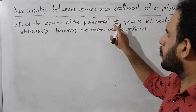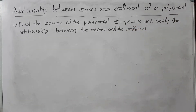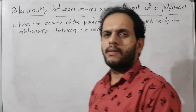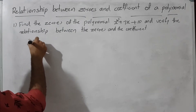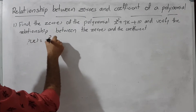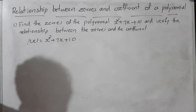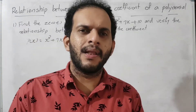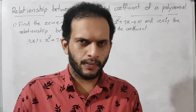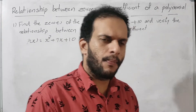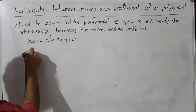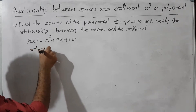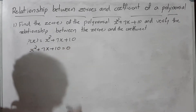Question: Find the zeros of the polynomial x² plus 7x plus 10 and verify the relationship between the zeros and the coefficients. Given p(x) equals x² plus 7x plus 10. We equate it to zero: x² plus 7x plus 10 equals 0.